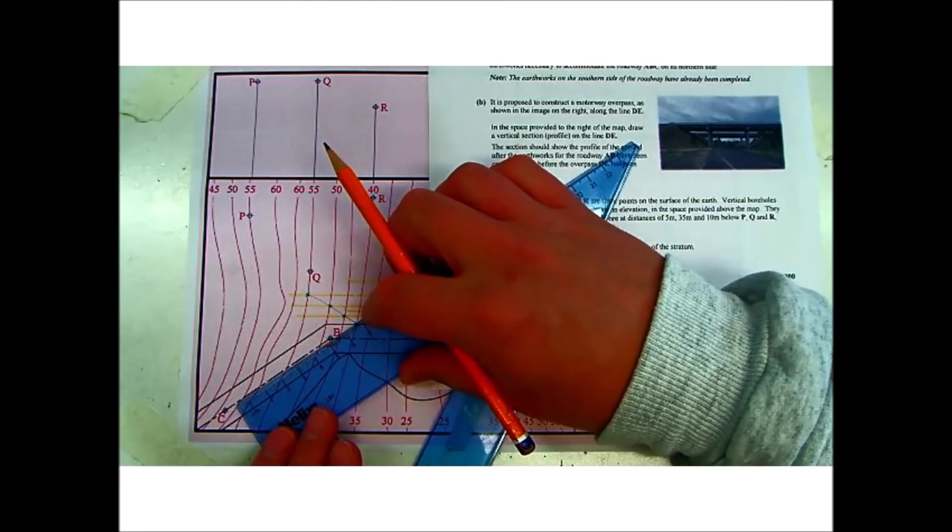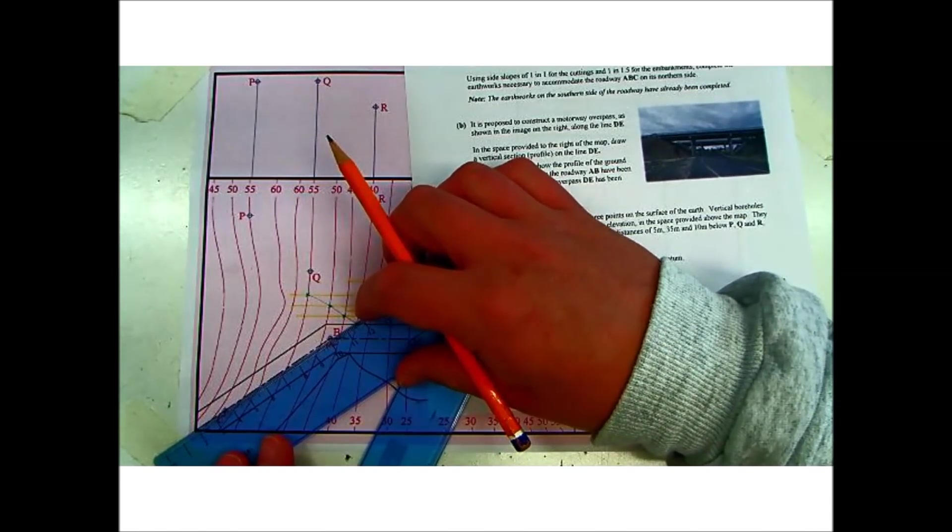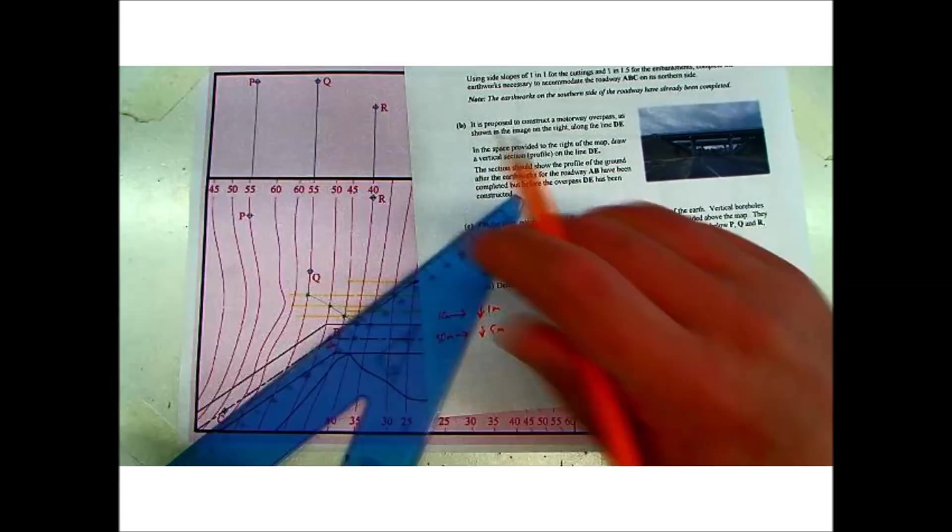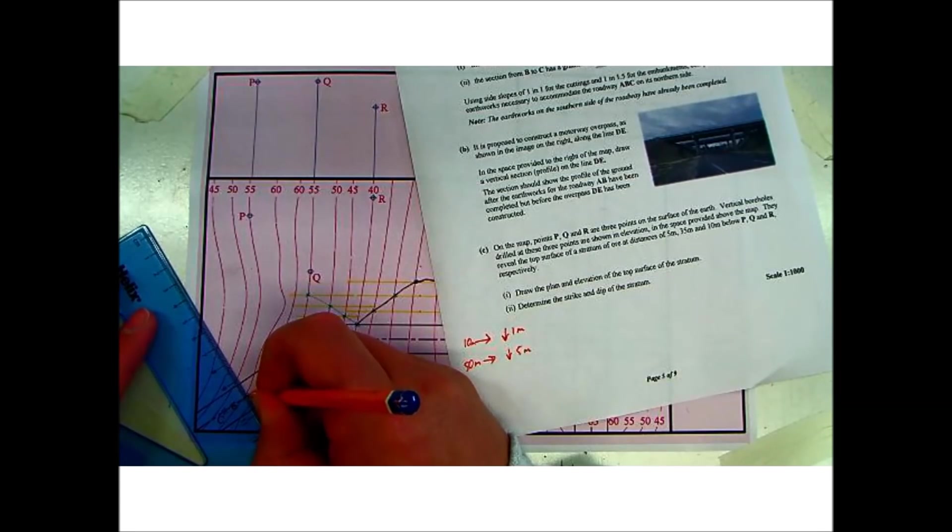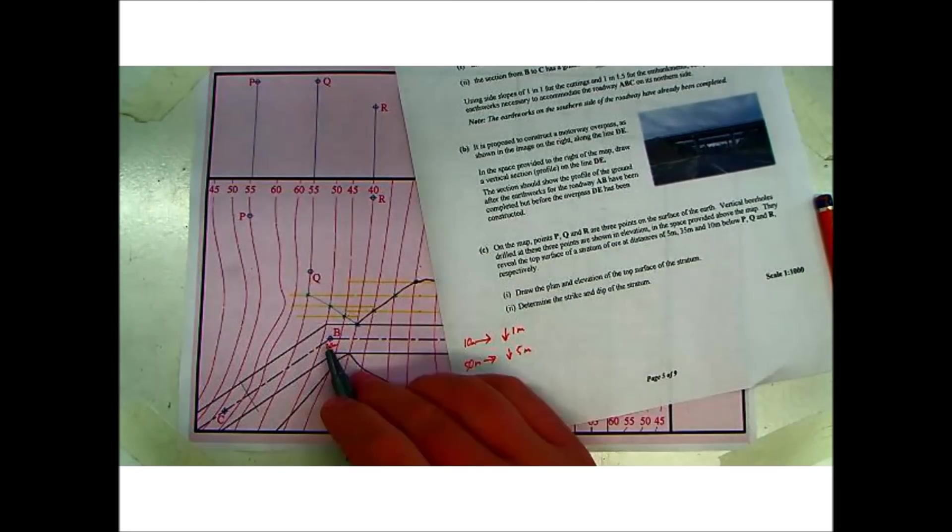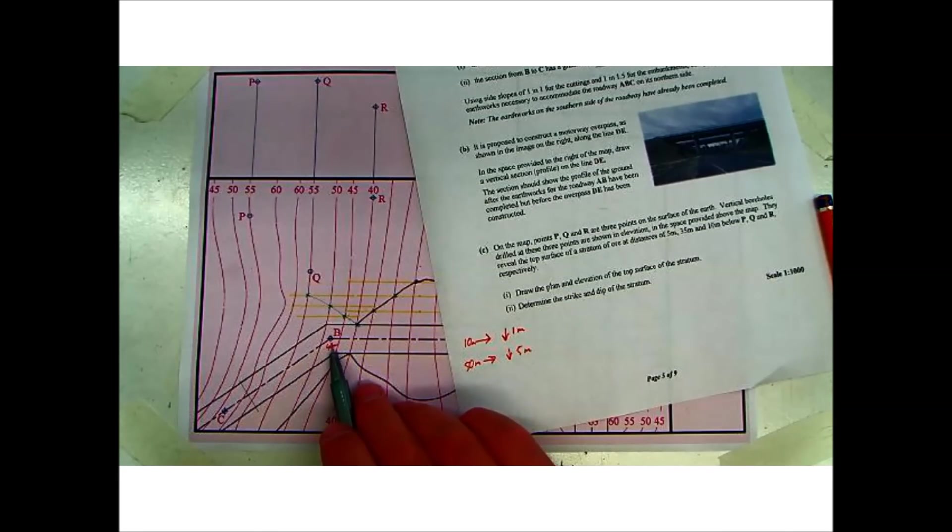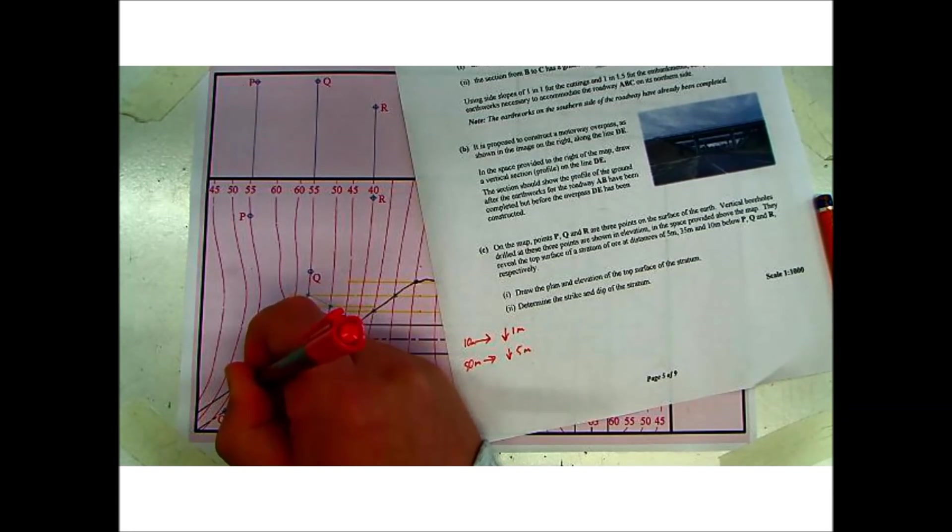So let's mark that on our road. So 50 mil down the road from B to C is here. Draw that perpendicular to the edge. So that's 50 mil down the road. It will drop 5 meters. So it went from 40 meters in altitude down. This now would be 35 meters.